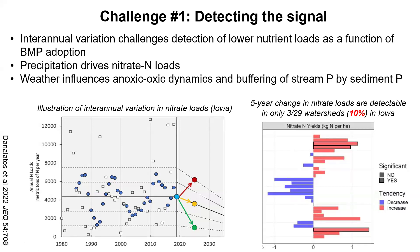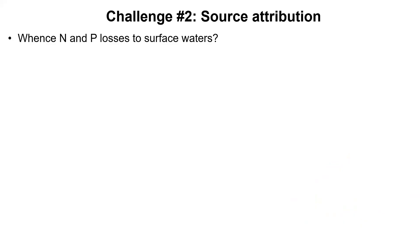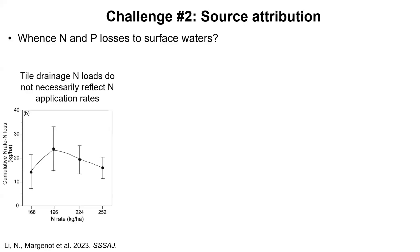Detecting the signal is difficult — a reality of state-scale or HUC-8 scale assessment. The second challenge is source attribution or source apportionment: where is the nitrogen and phosphorus coming from when it's being loaded to surface waters? We know the amount of nitrate we're leaching and exporting through tile drains is not simply a function of nitrogen fertilizer applied. It's not as simple as more N being put on the field means more nitrate leaching.